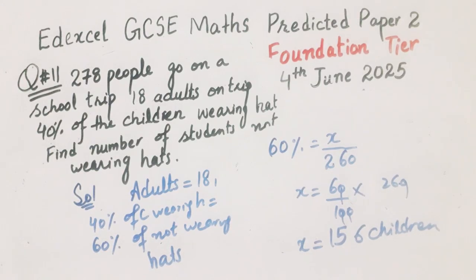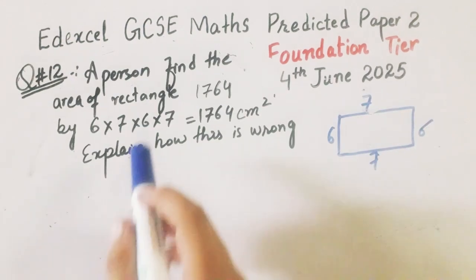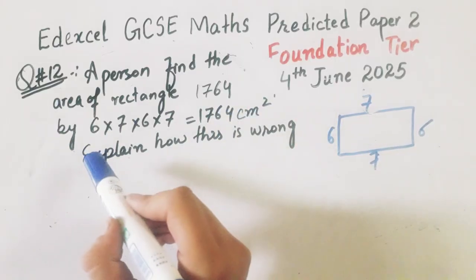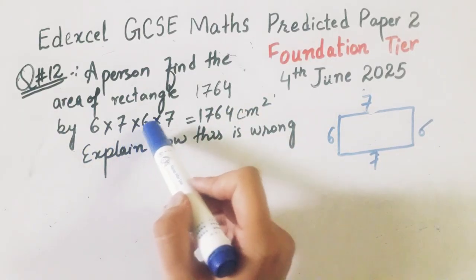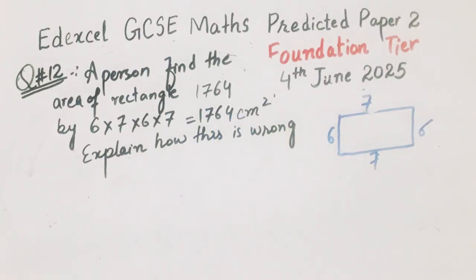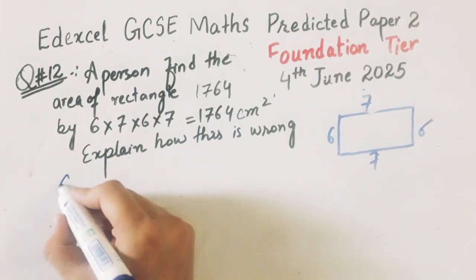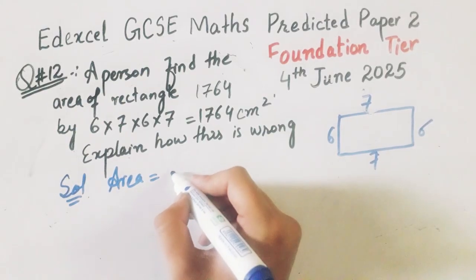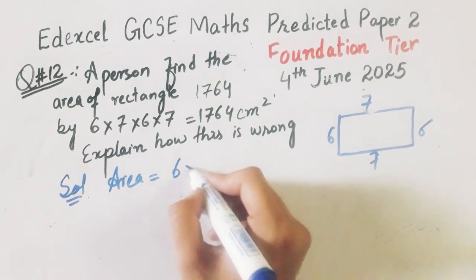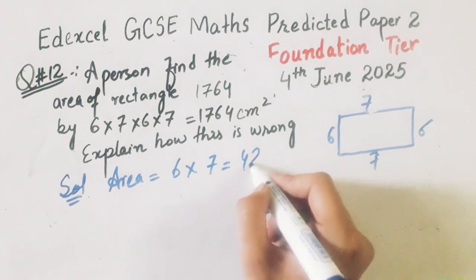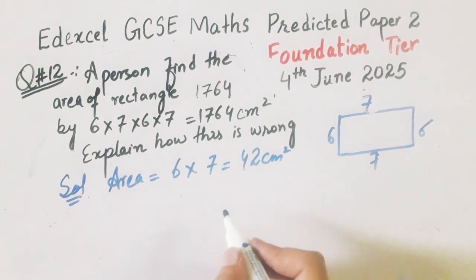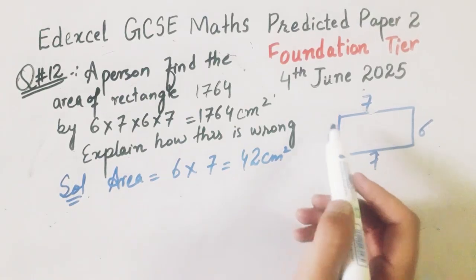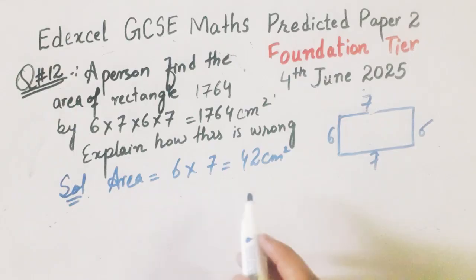Now we will solve question number 12. The question is: a person finds the area of a rectangle equal to 1764 by doing 6 multiply 7 multiply 6 multiply 7 equal to 1764. Explain how this is wrong. The formula of area for a rectangle is equal to length multiply width, which is 6 multiply 7, and that is equal to 42 centimeter square. We will not multiply all the sides — just multiply only the length and the width to get the area.